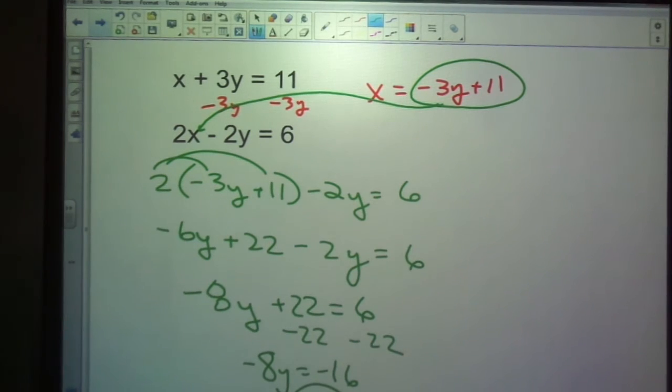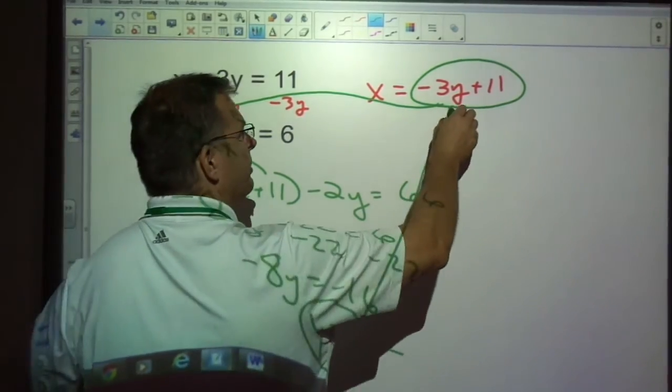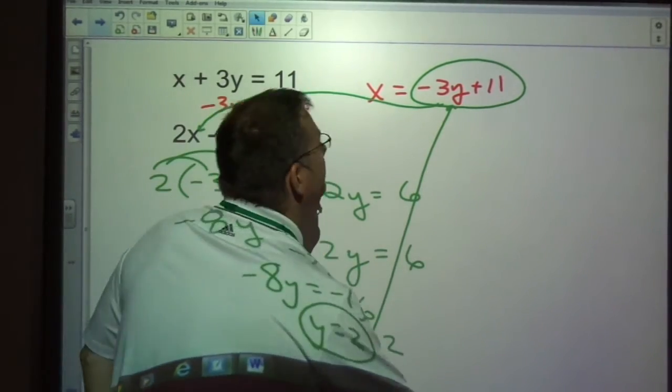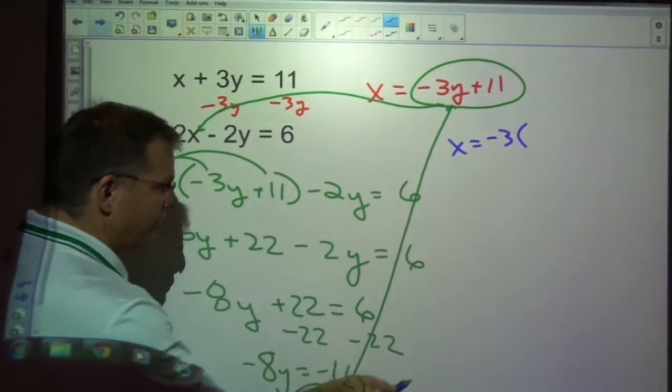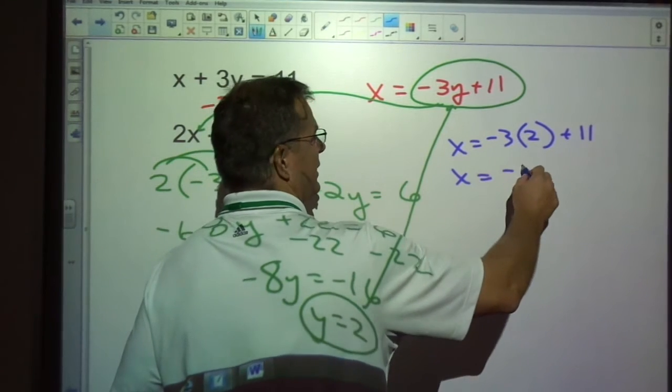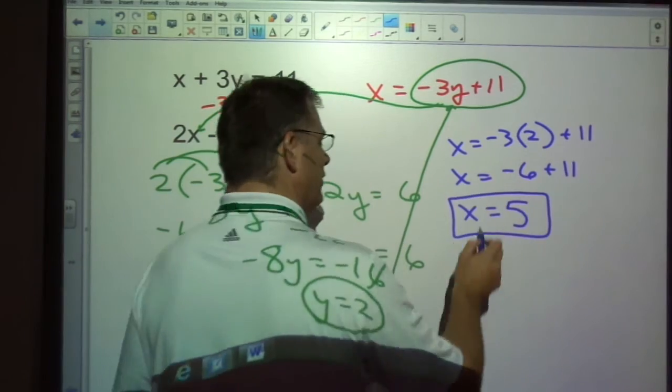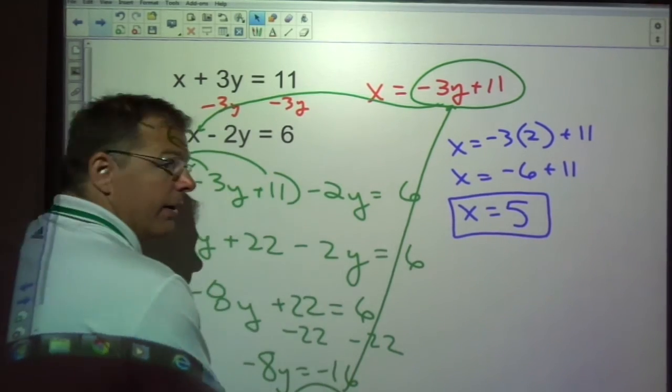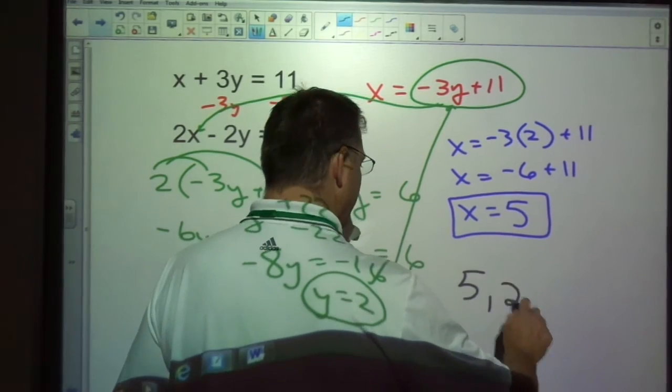Hopefully that's what you got as well. Now I'm going to plug it in. I'm going to choose to plug it in for this y all the way up here. So that would give me x equals negative 3 times 2 plus 11. So that is negative 6 plus 11, which is 5. So I write my answer as an ordered pair with x and then y. So my answer is 5, 2.